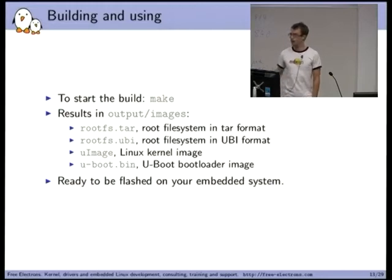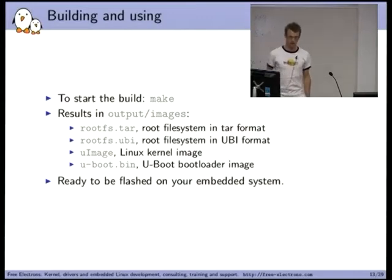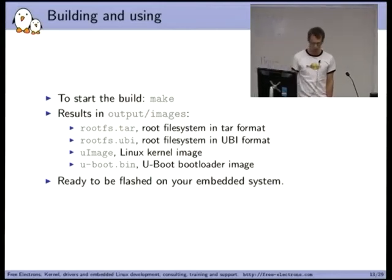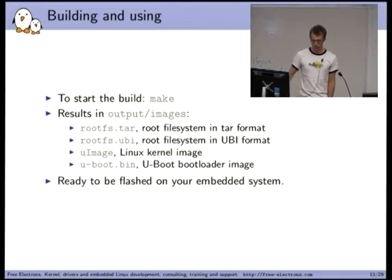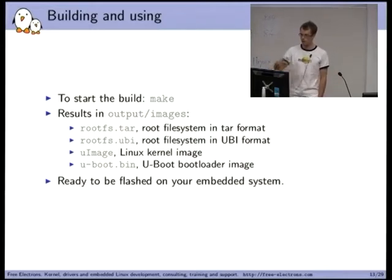To start the build you run `make` — that's the point where you drink one or two cups of coffee. At the end of the process, in the `output/images` directory you find the real stuff: the root filesystem image (in tarball or UBI format), the kernel image, and the U-Boot bootloader image. This is what needs to be flashed or installed to your target — pushed to an SD card or flashed to your embedded Linux platform.